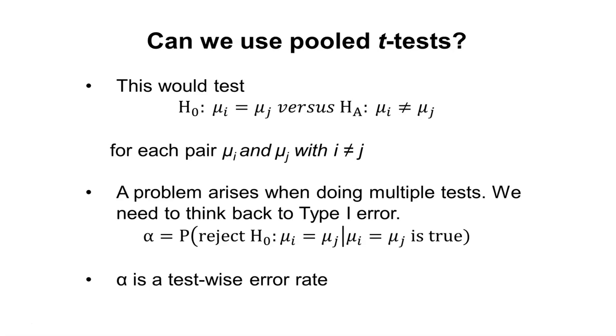However, we run into a problem when doing these multiple tests. And we need to think back to what the type 1 error is. And so here we're going to represent alpha by representing the probability that we reject the null hypothesis, that would say that mu sub i equals mu sub j given mu sub i equals mu sub j is actually true in the real world. And so in this case, we can say that alpha is a test-wise error rate.